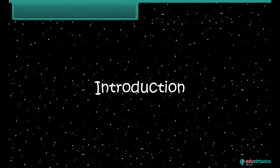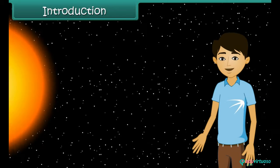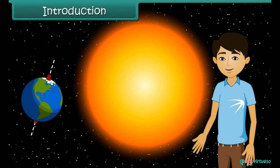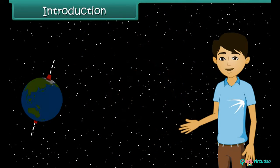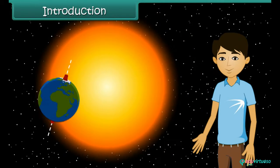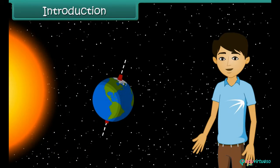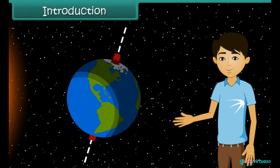Hello students, can you imagine how cold the earth would be if there were no sun? The sun is the earth's main source of heat. Only a little of the sun's heat reaches the earth; however, this is enough for life to exist on earth.